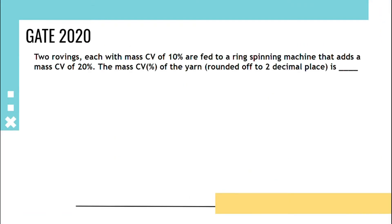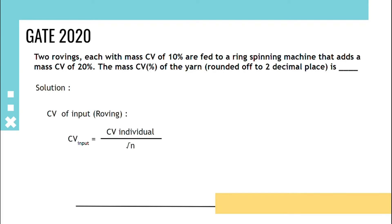Two rovings, each with a mass CV of 10 percent, are fed to a ring spinning machine that adds a mass CV of 20 percent. The mass CV percent of the yarn, rounded off to two decimal places, is asked. The solution: we have to find the CV of the input, which equals the CV of the individual upon root N. Here the rovings are two, so substituting N as 2.